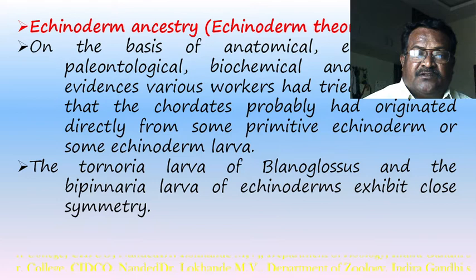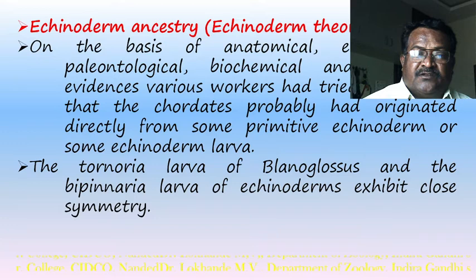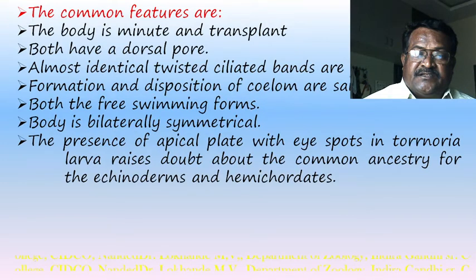Johnstone, Muller, and Bateson suggested that the tornaria and bipinnaria larvae evolved from a common ancestor. Common features include: both are minute and transparent, both have an almost identical dorsal form, twisted ciliated bands, identical formation and disposition of cilia, both are free-swimming, and both are bilaterally symmetrical.